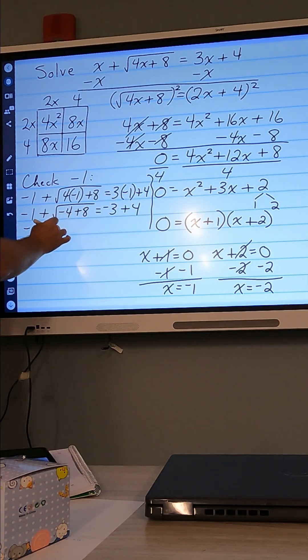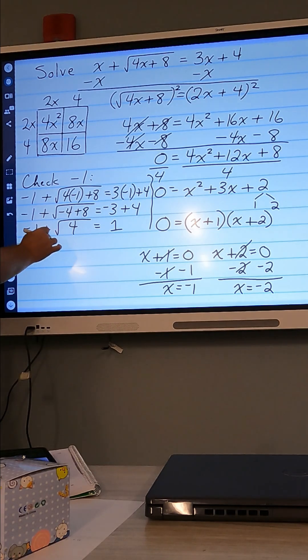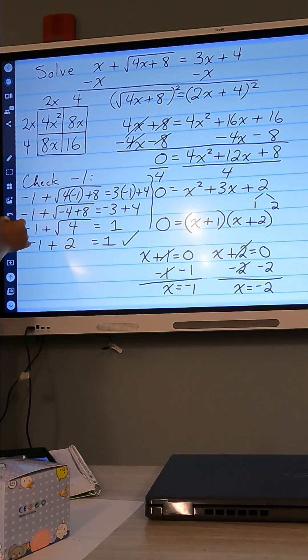Negative 1 plus, this adds to 4, equals 1. So we have negative 1 plus square root of 4 is 2. Does that equal 1? Yes, it does. So negative 1 does check out. That's one of our potential solutions.